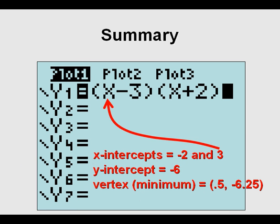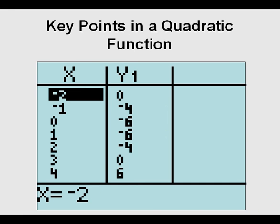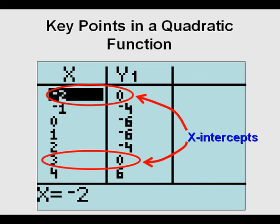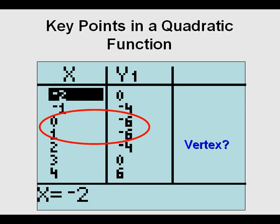To summarize: x-intercepts are negative 2 and 3, y-intercept is negative 6, and the vertex is at (0.5, -6.25). Looking back at the equation in y=, the x-intercept of 3 makes sense because 3 minus 3 equals 0, making that binomial zero. Similarly, x equals negative 2 makes the right binomial zero. If we go to Second, Graph for the table view, we can find x-intercepts where y equals 0, and confirm the y-intercept where x equals 0 gives y equals negative 6. The vertex isn't exact in the table but appears between x equals 0 and 1.